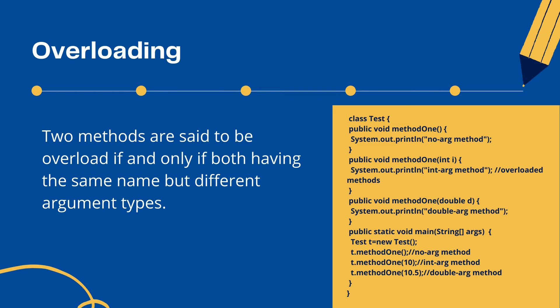In overloading, if the compiler is unable to find the method with an exact match, it won't throw a compile-time error immediately. Instead, the compiler promotes the argument to the next level and checks whether a matched method is available. If it is available, that method is called. If not, the compiler promotes the argument once again to the next level. This process continues until all possible promotions are exhausted — if still no matched method is found, we get a compile-time error. This process is called automatic promotion in overloading.